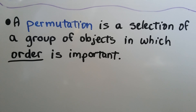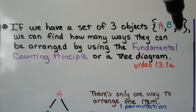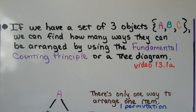A permutation is a selection of a group of objects in which the order is important. If we have a set of three objects, like this ABC in the set braces, we can find how many ways they can be arranged by using the fundamental counting principle, or a tree diagram, like we did in the last video, 13.1a.